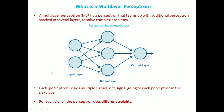Each perceptron sends multiple signals — one signal to each perceptron in the next layer. This input node is sending multiple signals where the first signal goes to the first neuron, the second signal to the second neuron, and the third signal to the third neuron. For each of these signals the perceptron uses different weights, and every line going from a perceptron in one layer to the next layer represents a different output. Each layer can have a large number of perceptrons and there can be multiple layers, so the multi-layer perceptron can quickly become a very complex system.